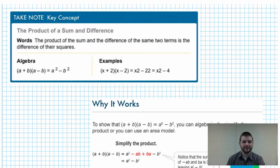A key concept: the product of a sum and difference. The product of the sum and difference of the same two terms is the difference of their squares. So what does that mean? Take a look at this algebra example. In the case of A plus B times A minus B, well that will equal A squared. Note that's the first term times the first term, or the first term squared, minus the second term squared.